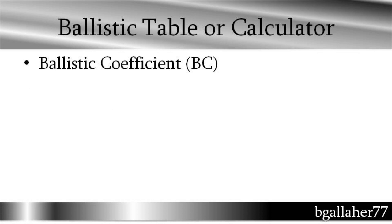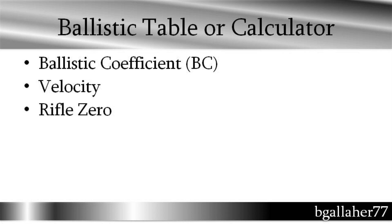To get the ballistic information, you need a few things. You need the ballistic coefficient of the bullet you're shooting, you need the velocity that the bullet is shooting with, and you need your rifle zero. Some people like to zero at 100, some people like to zero at 200 — it makes a difference.